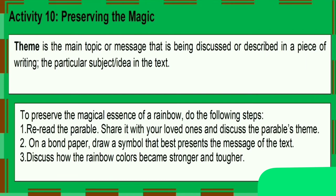When you are done, do activity number ten: Preserving the Magic. The theme is the main topic or message that is being discussed or described in a piece of writing — or it is the particular subject or idea in the text. To preserve the magical essence of a rainbow: number one, reread the parable and share it with your loved ones and discuss the parable's theme; number two, on a bond paper draw a symbol that best presents the message of the text; number three, discuss how the rainbow colors became stronger and tougher.